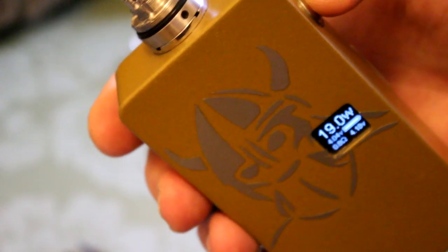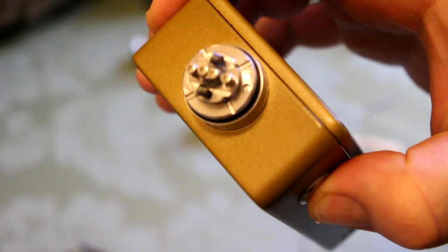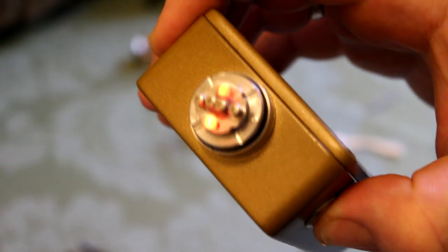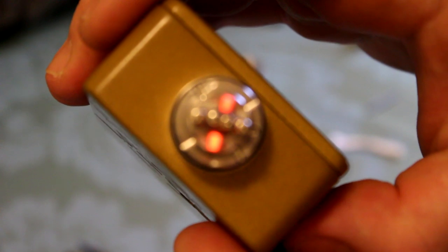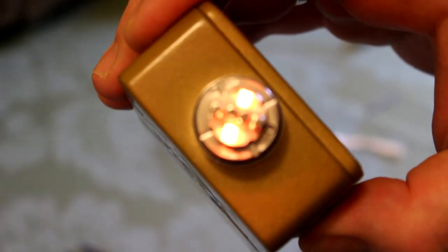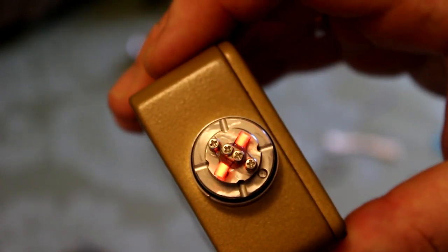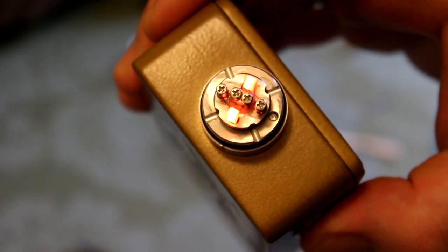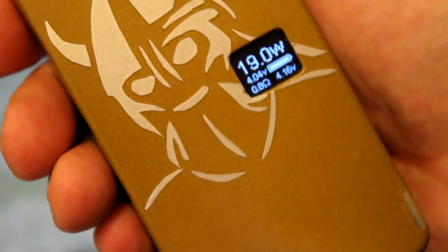I've got the Golden Box here at 19 watts just so I can bed the coils in. Let's see, they're heating very well together. That is 0.8 ohm resistance on the Orchid V4.